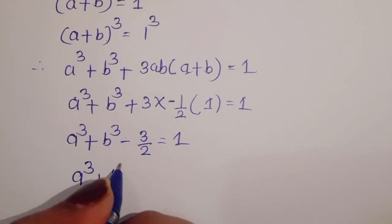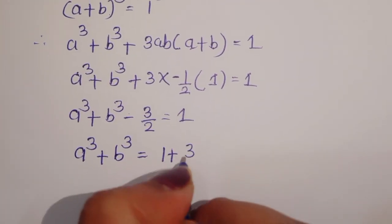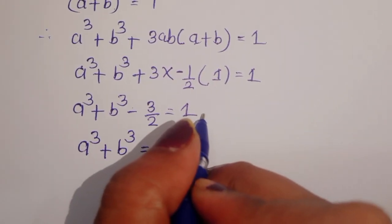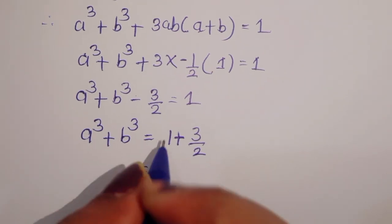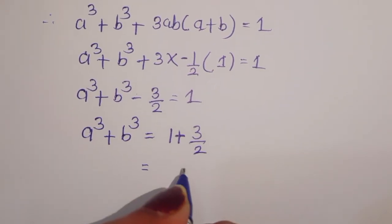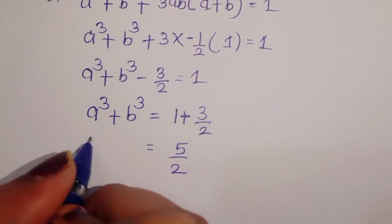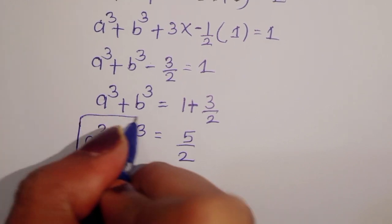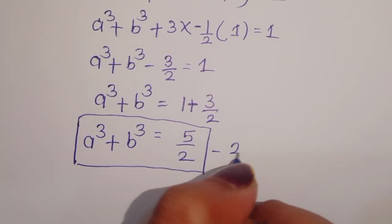Therefore a cube plus b cube is equal to 1 plus 3 upon 2, which equals 5 upon 2. So a cube plus b cube is equal to 5 upon 2. This is equation 2.